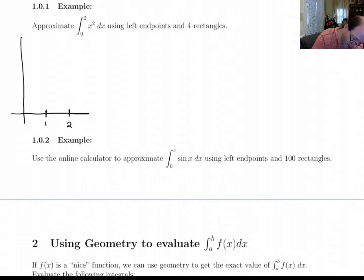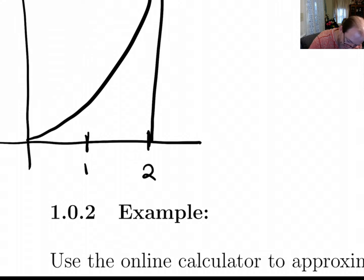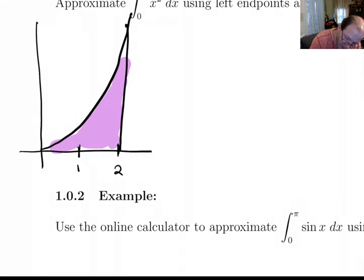I'm going to draw a parabola, and up here we only need this side of the parabola because we're going from 0 to 2. So what we're doing is we're trying to find this area inside of here using four rectangles and left endpoints. Alright, so let's draw in the rectangles.